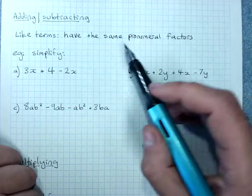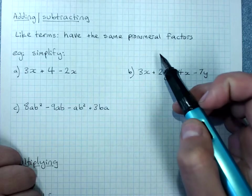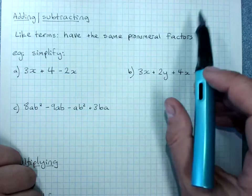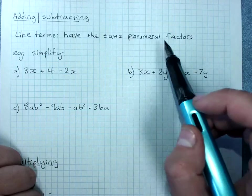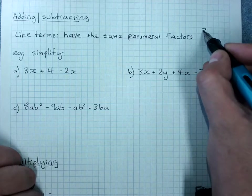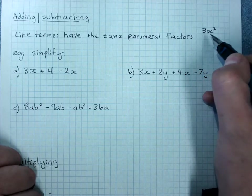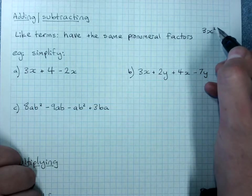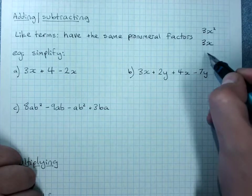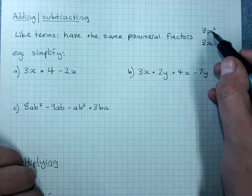Now in year 8 we probably said the same pronumeral parts with the same powers, but we're simplifying that to say the same pronumeral factors. So if I write 3x squared, the pronumeral factor here is x. They are not the same.